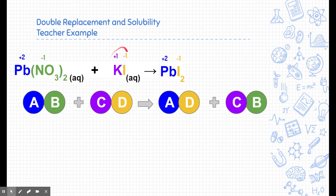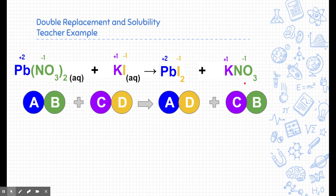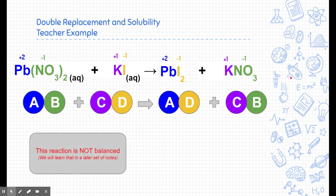Next, potassium is positive one — metals always go first — and nitrate is negative one, so it goes after. With a positive one and a negative one, I only need one of each: one potassium and one nitrate. These are the two products of the reaction between these two mixtures. Note that this reaction is not balanced — there is one iodine at the start but two iodines in the products — but at least we know what the products are, and we'll talk about balancing at a later date.